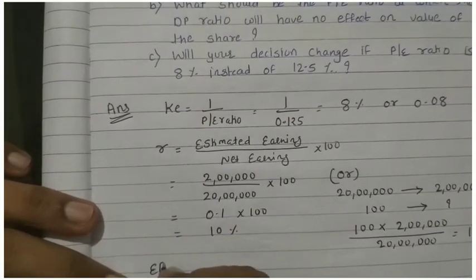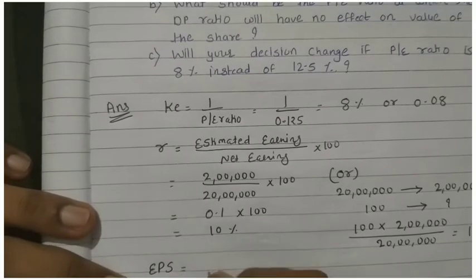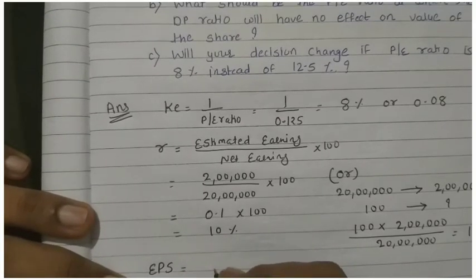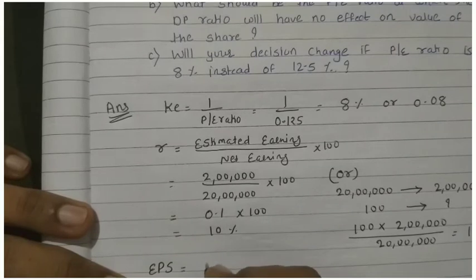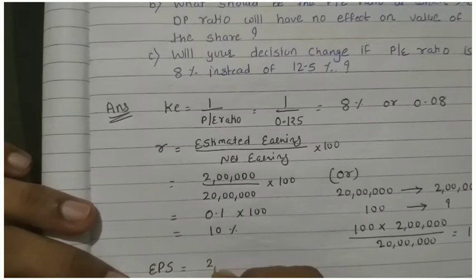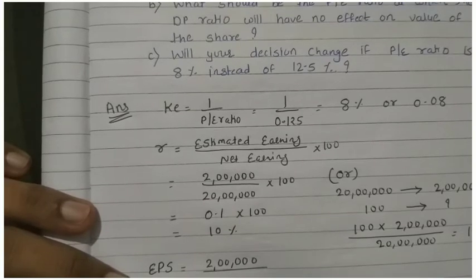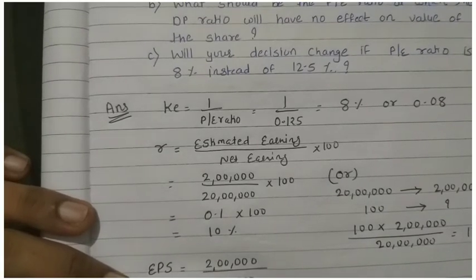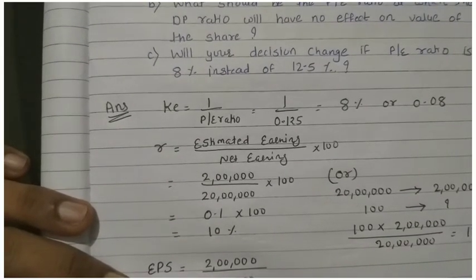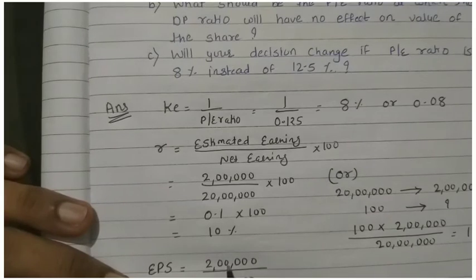Now you need EPS. The formula for EPS is total earning divided by number of shares. Earning given is 2 lakh, number of shares given directly in the sum is 20,000. Cancel the zeros, so EPS, that is earning per share of the company, is Rs. 10.